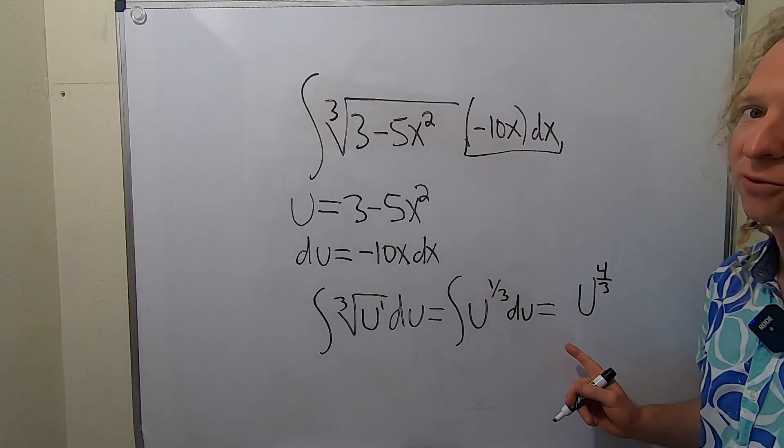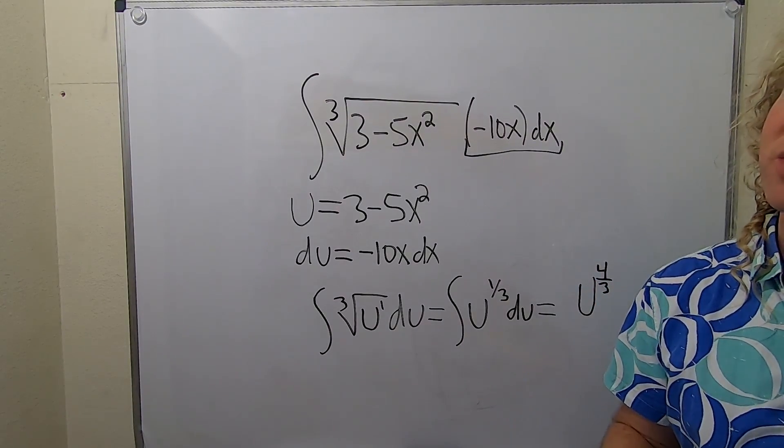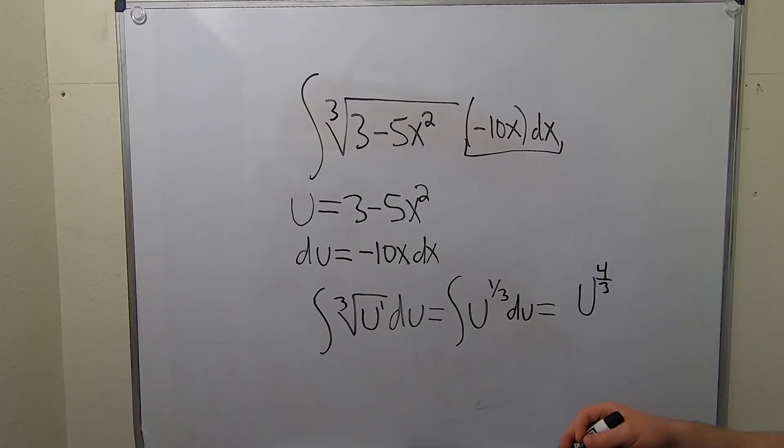So now we're dividing by 4 thirds. When you divide by 4 thirds, you really multiply by the reciprocal, so 3 fourths. Right, it's really over 4 thirds, and I'm skipping a step and multiplying by 3 fourths. Plus our c.